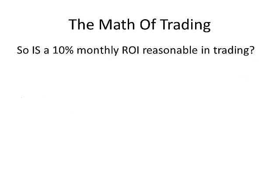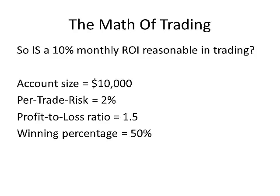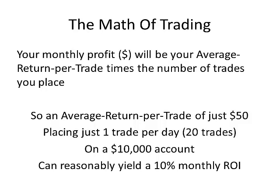Back to the original question: is a 10% monthly ROI reasonable in trading? We started with an account size of $10,000, a per-trade risk limit of 2%, a profit-to-loss ratio of 1.5 — not extreme by any means — and a winning percentage of 50%. Very reasonable numbers. Your monthly profit is your average return per trade times the number of trades. The average return per trade is $50, placing one trade per day, $1,000 on a $10,000 account — yes, that can reasonably yield a 10% monthly ROI.